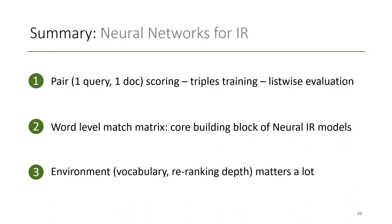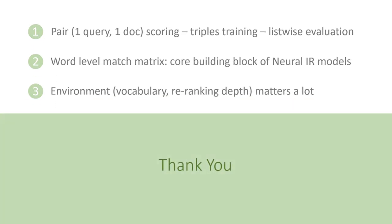To summarize: what I want you to take away from this lecture is that we score pairs of query and document full text, but we train with triples and evaluate list-wise. Word-level match matrices are the core building block of early neural IR models. The environment in which you use the neural IR model — namely the vocabulary and the re-ranking depth — matter a lot. With that, I thank you for your attention. I hope I've inspired you for the second exercise, and I look forward to the next talk when we talk about self-attention. See you!